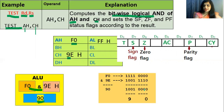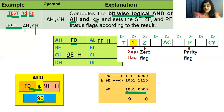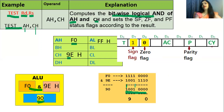According to the result 90: the most significant bit is 1, which indicates the result is negative, so the sign flag is set to 1. The result is non-zero, so the zero flag is 0. For the parity flag — it is an even parity flag, meaning it sets to 1 when the result has an even number of 1s. Counting the 1s in 90: there are 2, which is even, so the parity flag is set to 1.